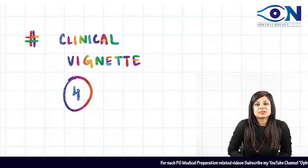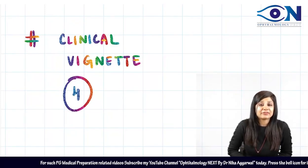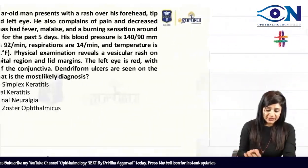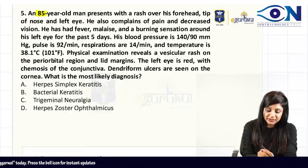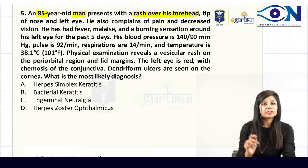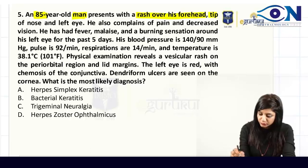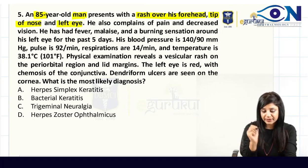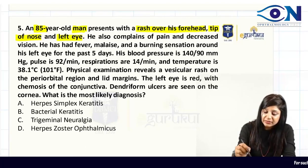Welcome to the clinical vignettes. Let's discuss clinical vignette number four. The patient is an 85-year-old man who is having a rash over the forehead, also involving the tip of the nose and the left eye.